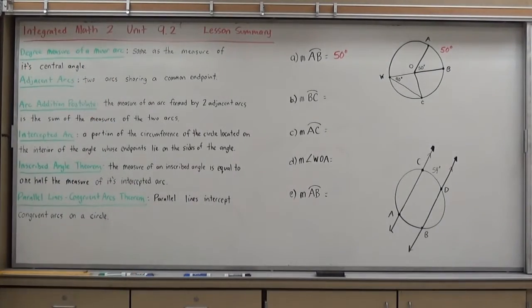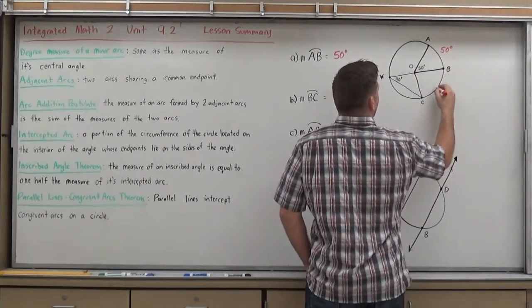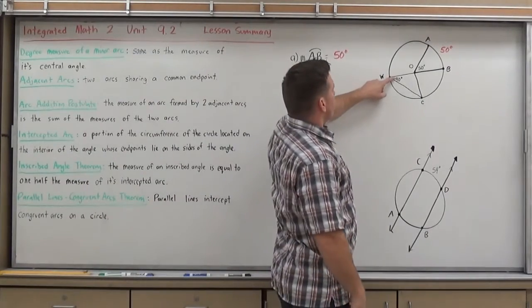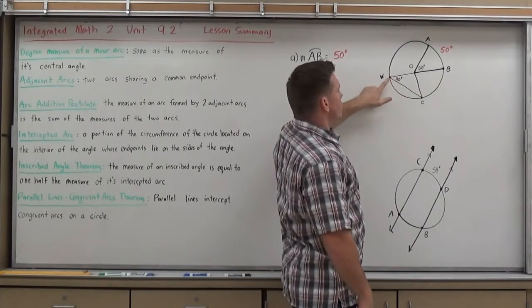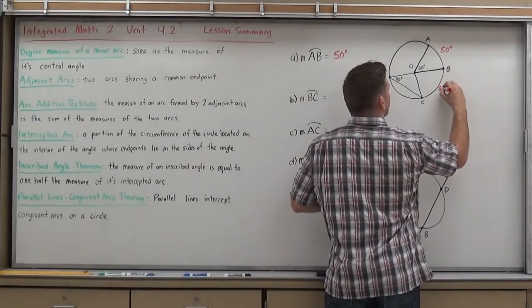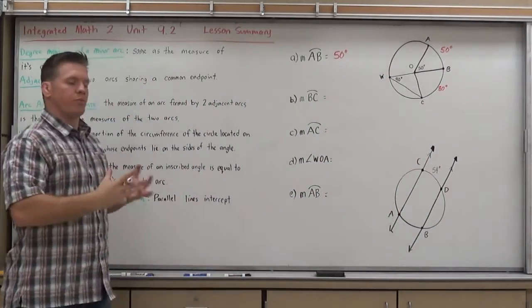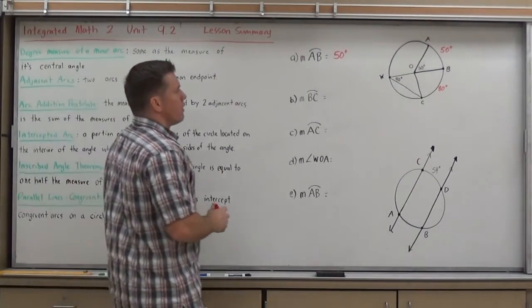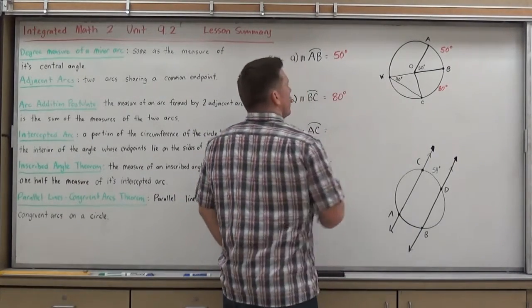Now let's take a look at arc BC. Arc BC is going to require me to kind of work backwards. I know that an inscribed angle is half its arc measure. So the inscribed angle in this problem is 40. It should be half its arc measure. So if it's half its arc measure, that means the arc is double the angle. So I know that arc BC must be 80 degrees. So you just need to be able to work with those inscribed angles both directions. Double it or half it depending on the direction you're going.